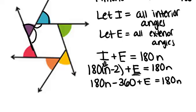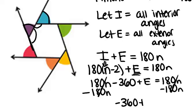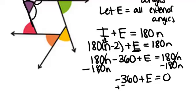Now there's a 180n on both sides, so I'm going to subtract that off. And you'll see now that the n's have gone away completely, so the number of sides now is not relevant. And we have negative 360 plus E equals 0.